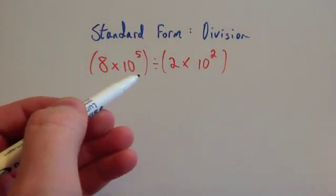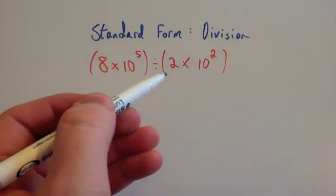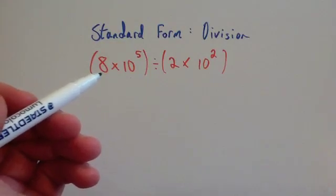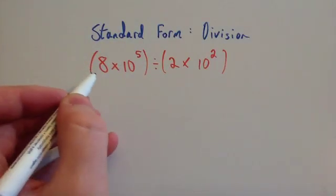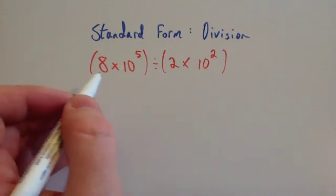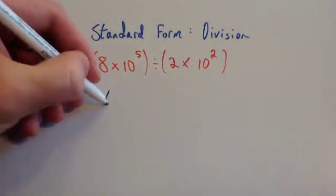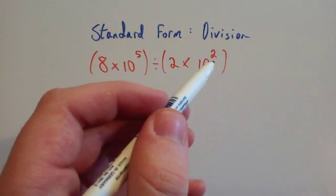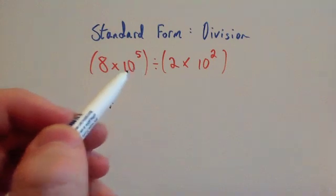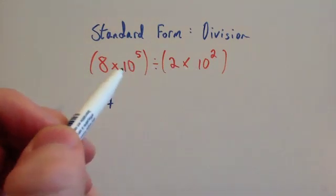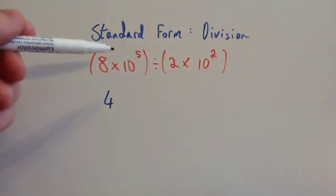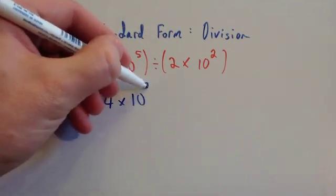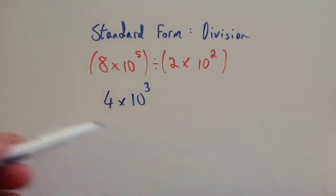So if you've got 8 times 10 to the 5 and you divide it by 2 times 10 squared. First of all you do the division for the numbers at the front of each of the numbers in standard form. So you're going to do 8 divided by 2, which is 4. And then you're going to do 10 to the 5 divided by 10 squared. Remember when you're dividing numbers with the same base number you take away the powers. So 10 to the 5 divided by 10 squared would be 10 to the power of 3. So that's that division.